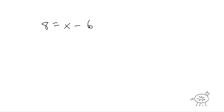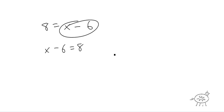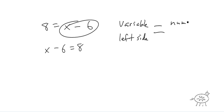Sometimes you'll see problems that look like this: 8 equals x minus 6. What I would do is bring the variable to the left-hand side, and rewrite this as x minus 6 equals 8. We haven't changed the problem at all — it's still 8 equals x minus 6, except now we're saying x minus 6 equals 8. Then you just solve the problem like normal. The variable is on the left side, and that's equal to a number on the right side. So we add 6 to both sides and get x equals 14.